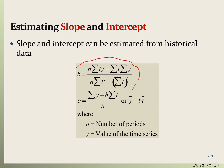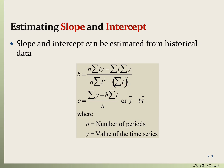The formulas for a and b are shown here. You first find b, the slope, and then you find a, the intercept, using the formula: a equals the average of y minus b multiplied by the average of t. Today we're not going to do this by hand — we're going to use Excel to estimate the slope and intercept of the linear trend.